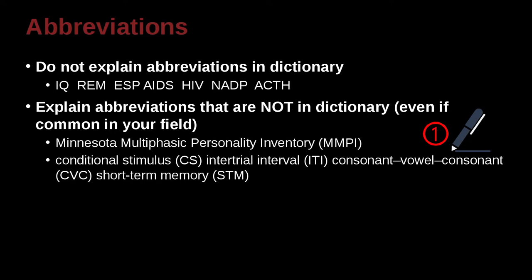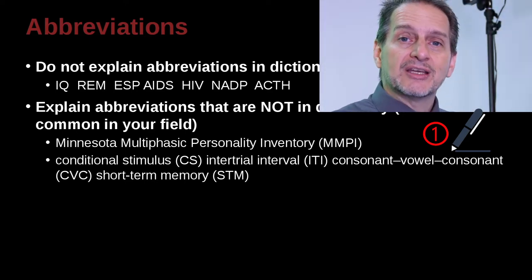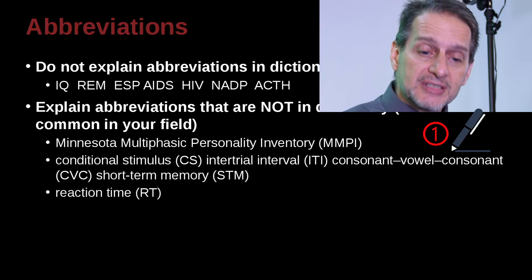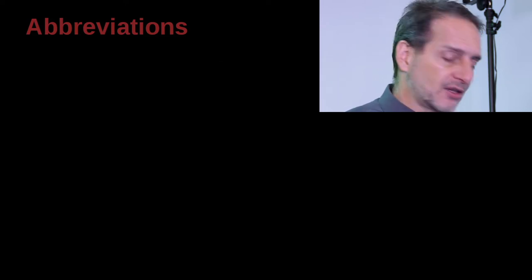So for example, Minnesota Multiphasic Personality Inventory, or MMPI. This is the first time it is in the paper. This is very common. Everybody in the field of psychology knows this. But anyway, the first time you explain it. Again though, it depends on your journal. Follow the rules you're targeting. Here's another example. Conditional stimulus, CS, intertrial interval, ITI, constant vowel constant, CVC, short-term memory, STM. So all of these are really common, very, very normal. But anyway, explain them the first time. Reaction time, RT, and so on.